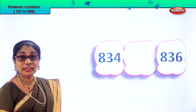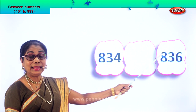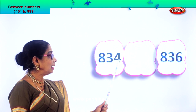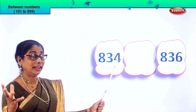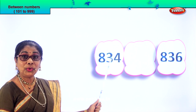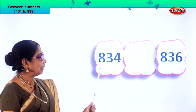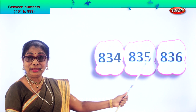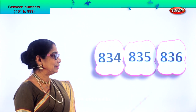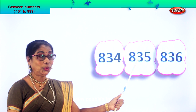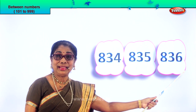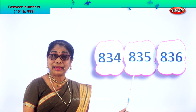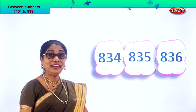834 and 836. After 4 comes 5, after 34 comes 35. So you get 834, 835, 836. So we found the number between as 835.